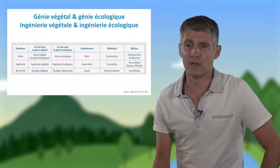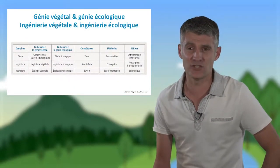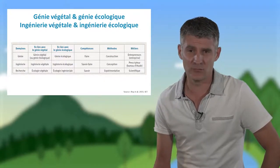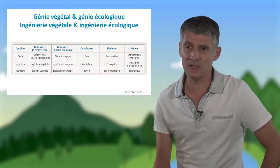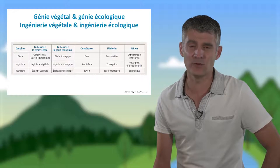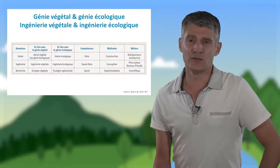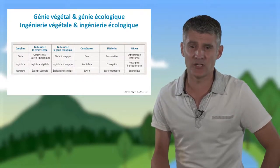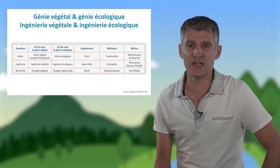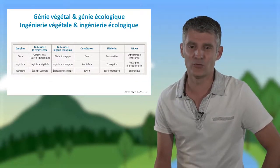Comment situer ces termes par rapport à l'ingénierie écologique et à l'ingénierie végétale ? Le génie se réfère souvent à la phase de construction des ouvrages, alors que l'ingénierie correspond plus à la phase de conception des projets et des ouvrages. On pourrait aller plus loin et parler des domaines liés : l'écologie végétale pour le génie végétal, et l'écologie ingénierielle, qui serait une écologie se mettant au service de l'ingénierie.